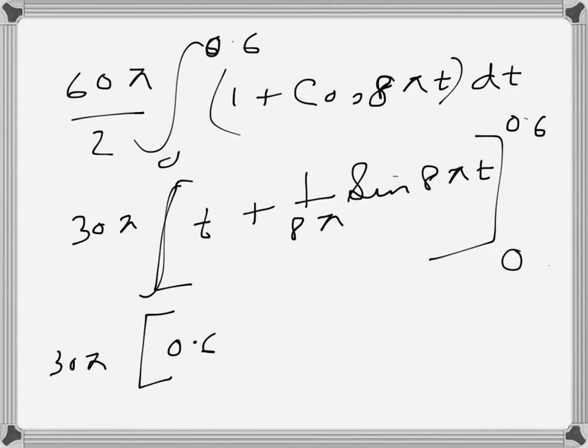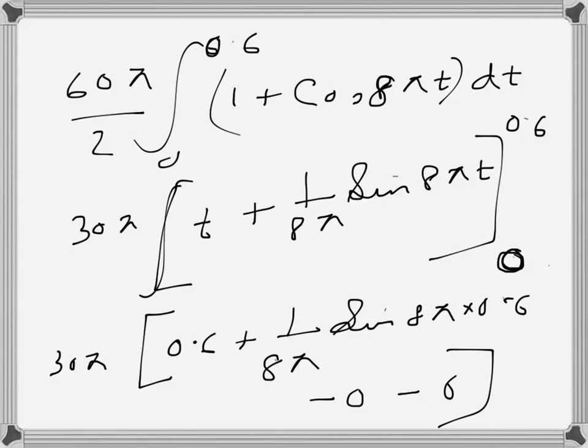30π, and if I now plug in the values: 0.6 plus 1 over 8π times sin 8π times 0.6. The second one, when I write the lower one, becomes 0, and sine 0 is also 0, so both of them are 0. Those two are gone, we can ignore them.